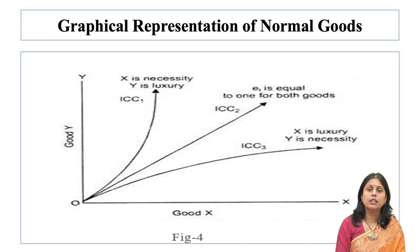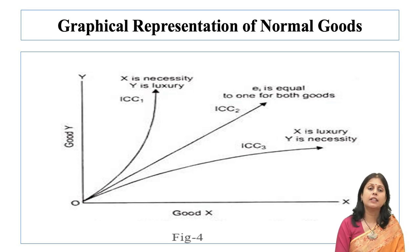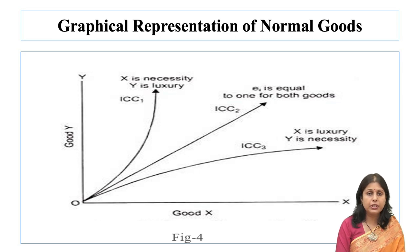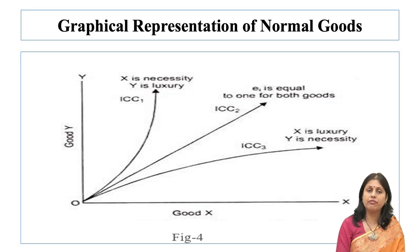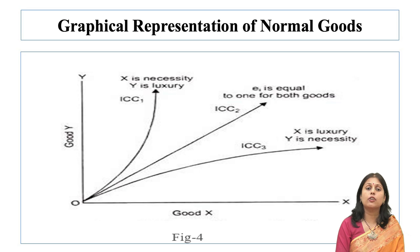It will be seen from figure 4 that income consumption curve ICC2 is a linear curve passing through the origin, which implies that the increases in quantities purchased of both goods rise in proportion to income, and therefore neither good is a luxury or a necessity. If the income effect is positive for both goods X and Y, the income consumption curve will slope upward to the right, as seen in figure 1. Upward sloping income consumption curves for various goods may be of different slopes, as shown in figure 4, indicating both goods to be normal goods with positive income effect.